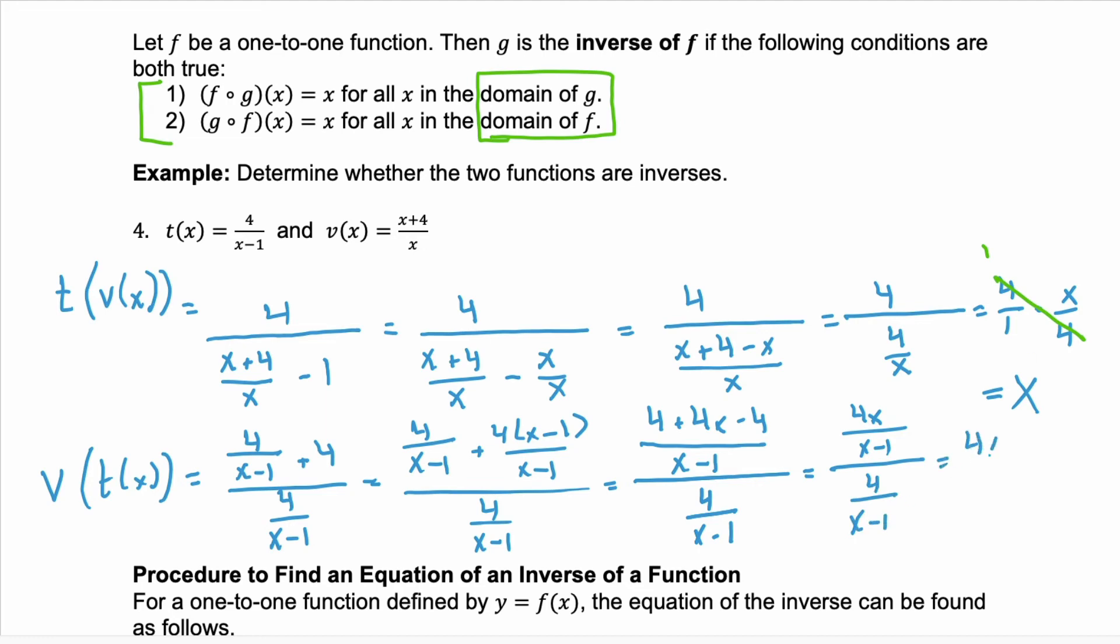Let's change this to multiplication. So we have four x over x minus one times x minus one over four. Notice what simplifies. The x minus one in the denominator and the numerator become one. And the fours here become one. So this composition also equals x. So yes, these two functions are indeed inverses of each other.